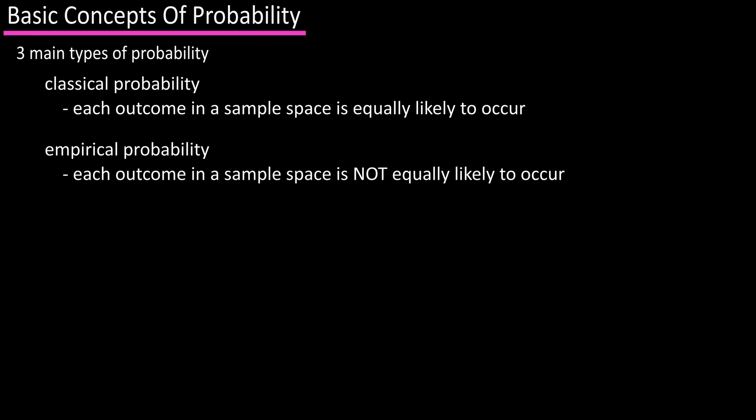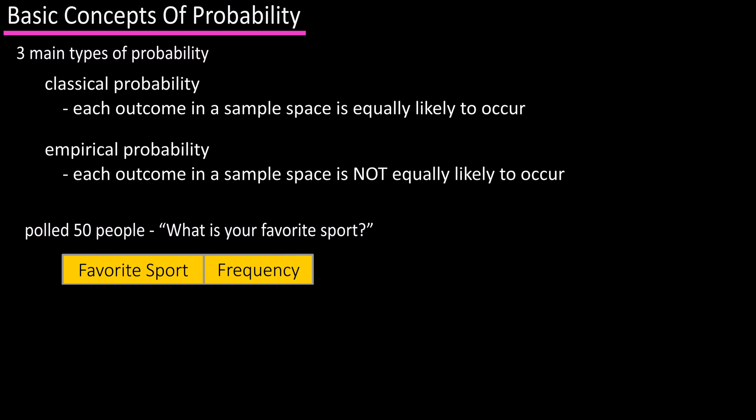Empirical probability is when each outcome is not equally likely to occur, and it is based on observations obtained from experiments. For instance, let's say you polled 50 people and asked them what their favorite sport is. Using a frequency table,